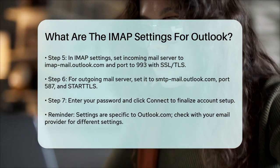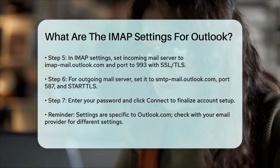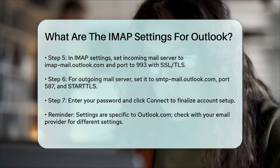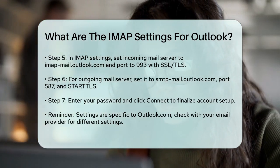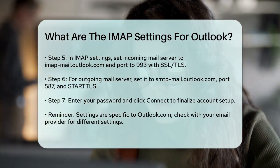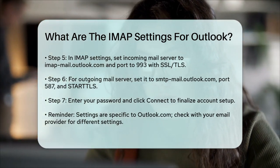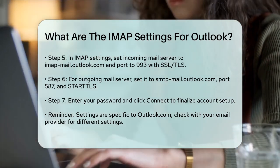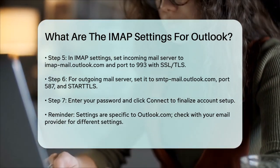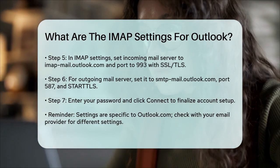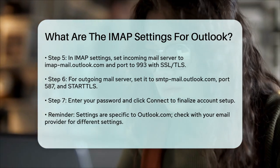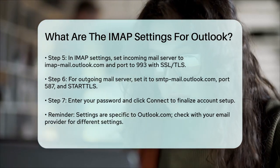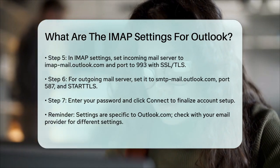Enter your password and click Connect to add the account. By following these steps, you'll be able to set up your Outlook.com account using IMAP and start managing your emails efficiently. Remember, these settings are specific to Outlook.com accounts, so if you're using a different email provider, the settings might be different. Always check the specific settings for your email provider to ensure everything works correctly.